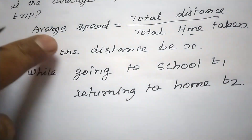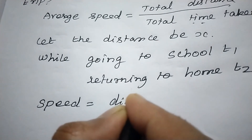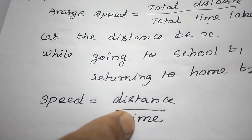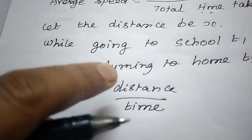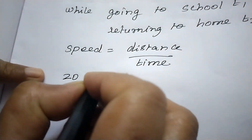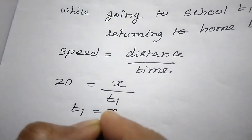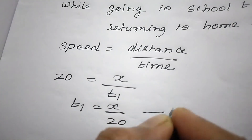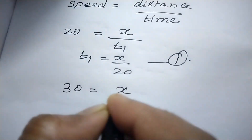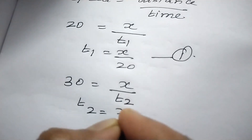We know that speed equals distance divided by time. The speed going to school is 20 km/h, so 20 = x / t1, which gives t1 = x / 20. Similarly for the return trip at 30 km/h: 30 = x / t2, so t2 = x / 30.